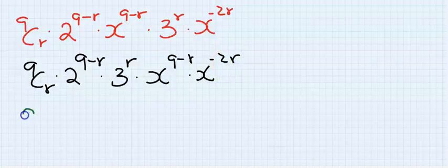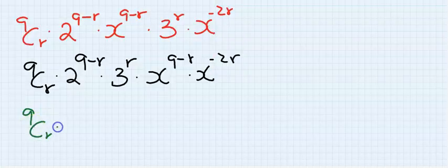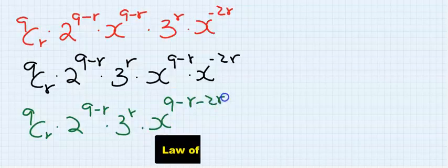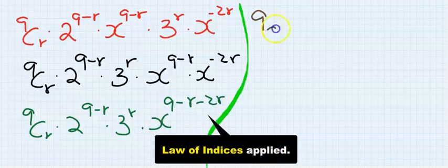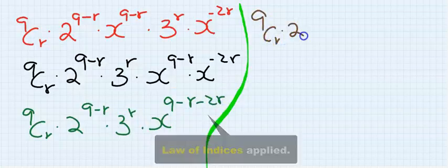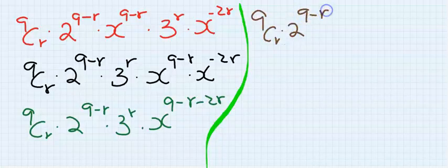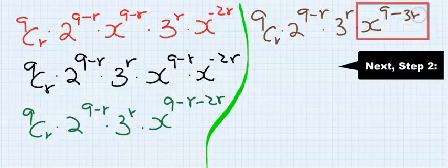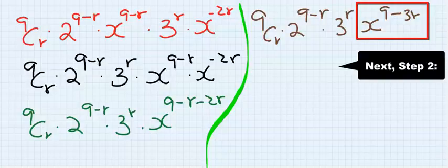We don't know what r is. 9 combination r, 2 to the power of 9 minus r, 3 to the power of r, x to the power of 9 minus r minus 2r. 9 combination r, 2 to the power of 9 minus r, 3 to the power of r, x to the power of 9 minus 3r.